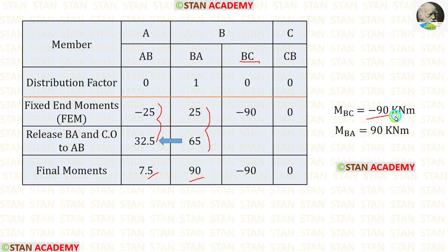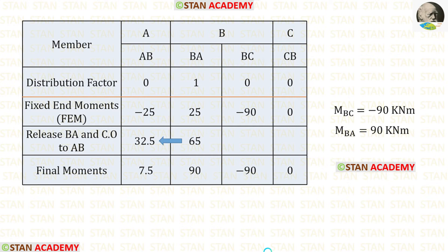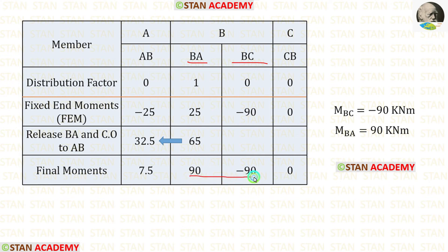For MBC, we have already calculated the final moment. For CB, the moment is 0. In this analysis, we cannot proceed further because we cannot do further distribution — distribution can only be done at joints. For joint B, the members BA and BC both have final moments already calculated. So these are our final moments.